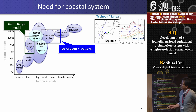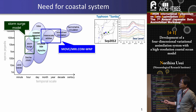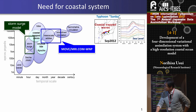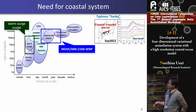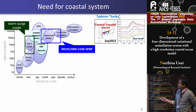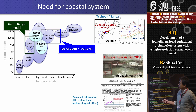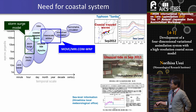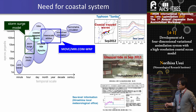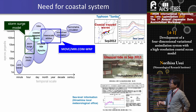For example, we had Typhoon Shanshan in September 2012. This typhoon approached the western part of Japan and passed through the Japan Sea. After the passage of this typhoon, coastal trapped waves were excited and propagated along the coast of the Japan Sea. It caused a significant sea level rise of up to about 50 cm. But the present operational system could not represent this process. In addition, in 2011, we had an abnormally high sea level event in summer, with a sea level anomaly exceeding 30 cm, which caused coastal flooding. So in terms of coastal disaster prevention, this kind of coastal phenomena is really important.